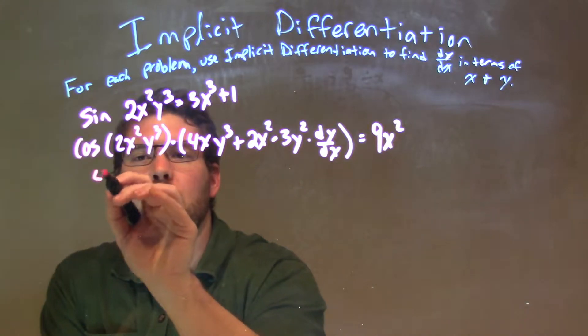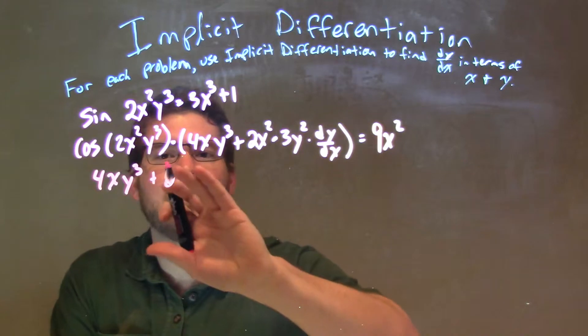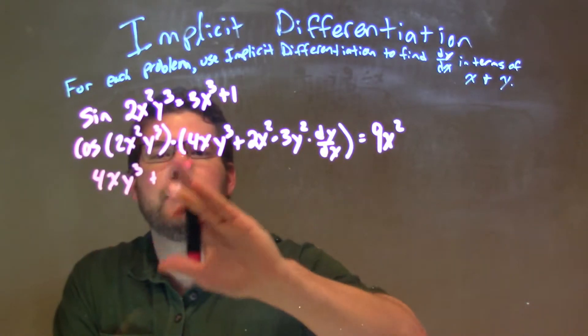So I have 4xy cubed plus, 2 times 3, we simplify this up a little bit, 2 times 3 means 6, so 6x squared y squared dy/dx equals